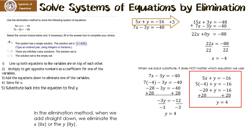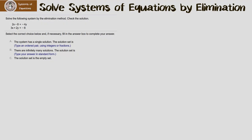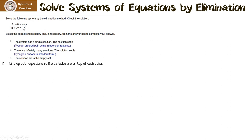Let's try another one together. Solve the system by the elimination method. The first thing we have to do is line up the variables on top of each other. The x's are on top of each other, but the y's are not. So with this first equation, I need to get it in the form x, y equals a number. The easiest way is to subtract 2x from both sides, leaving negative 8 equals negative 2x minus 4y. Flipping it around, that gives us negative 2x minus 4y equals negative 8.